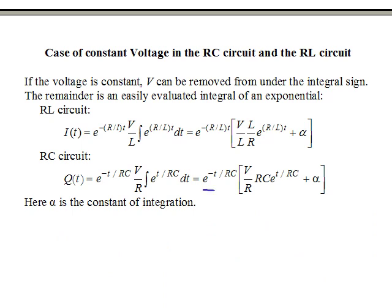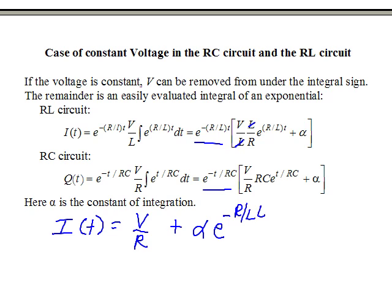Before going to the next slide, let's distribute the outer exponential through the parentheses for both circuits. When I multiply E to the minus R over LT times E to the plus R over LT, that product becomes 1, and L cancels, so the first term is simply V over R. The second term is alpha times E to the minus R over LT. Similarly for charge Q(T): the R's cancel and we get V times C plus alpha times E to the minus T over RC.